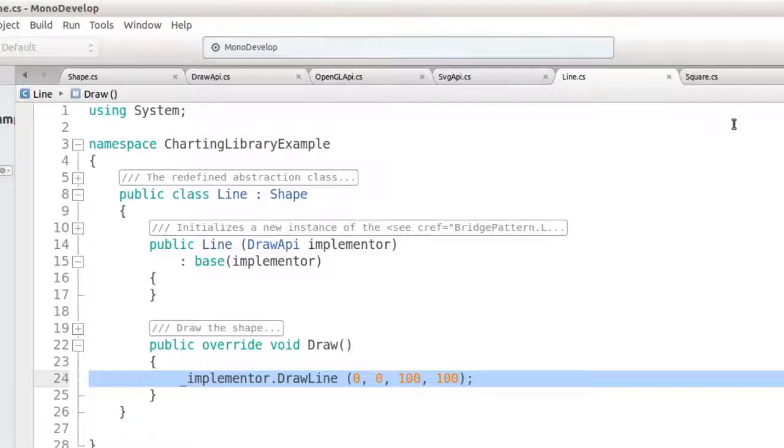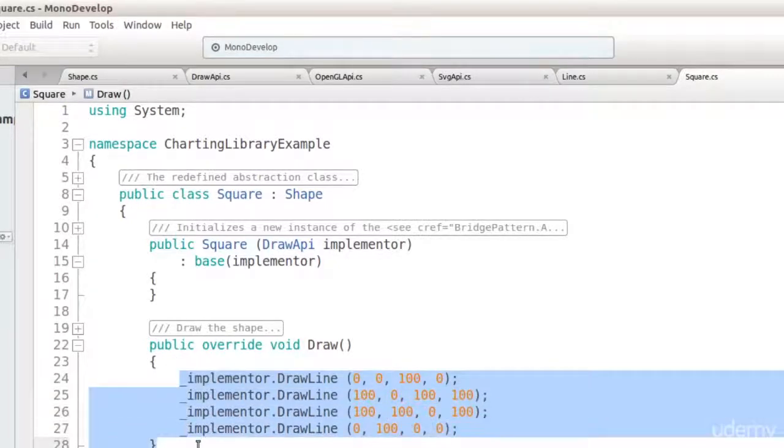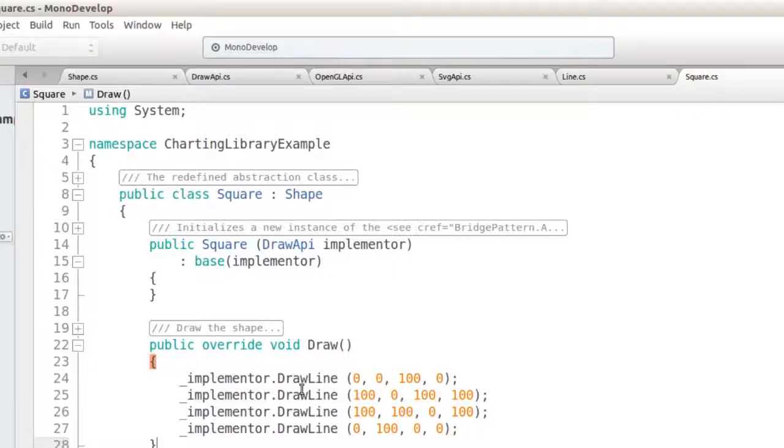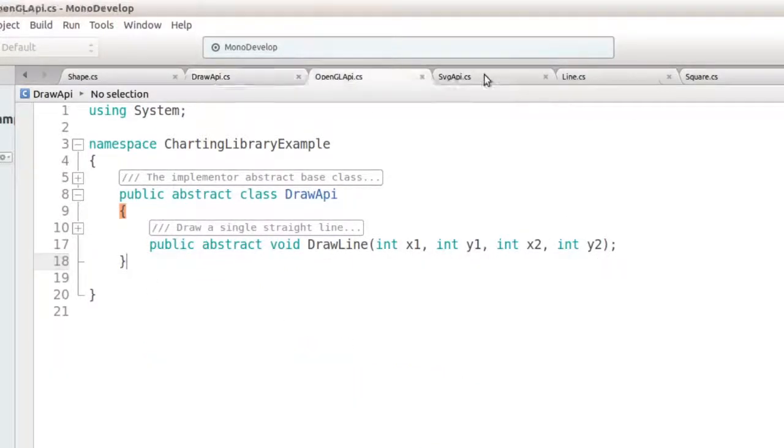Let's take a look at the square class. It also implements the draw method, but it makes 4 API calls to draw the 4 line segments that make up a square. Note that the square class has no idea how to draw itself as a bitmap or SVG image. And conversely, the draw API classes have no idea what a square is. The two object hierarchies are completely independent.